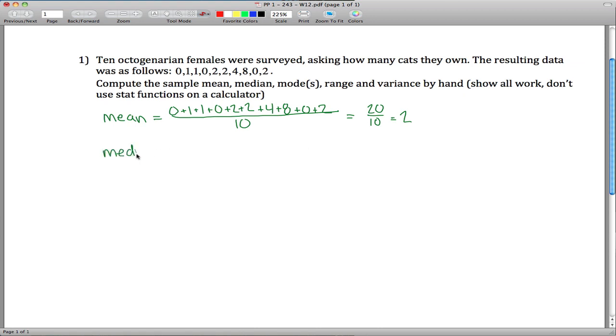For the median, what you want to do is first order your list. So we have one 0 here, another 0 here, and it looks like another 0 over there. So 3 0's, 1, 2 1's, let's see, 1, 2, 3 2's, a 4, and an 8. Make sure we got them all, 1, 2, 3, 4, 5, 6, 7, 8, 9, 10.